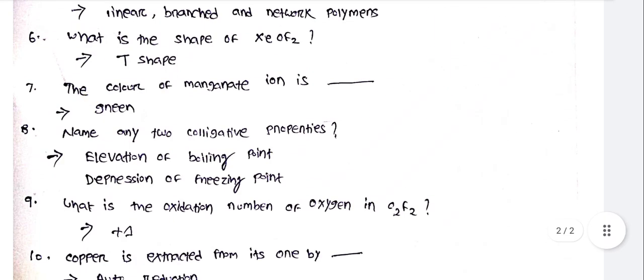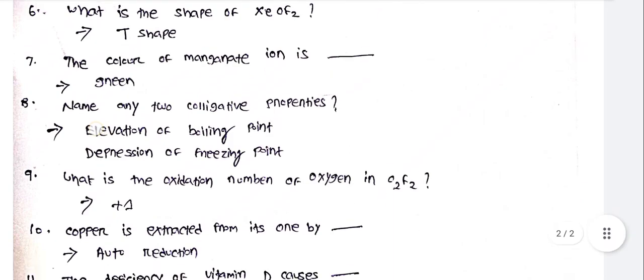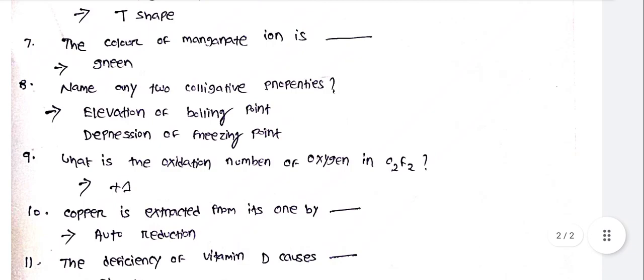The color of the manganese ion is green. Name any two colligative properties: elevation of boiling point and depression of freezing point.